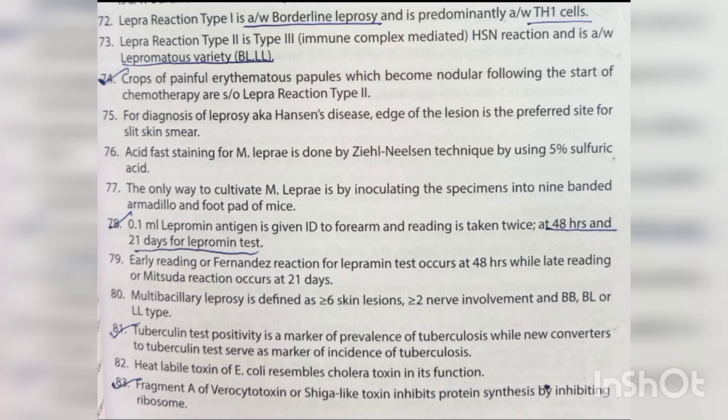Lepra reaction Type 1 is associated with borderline leprosy and is predominantly associated with Th1 cells. Lepra reaction Type 2 is a Type 3 immune complex-mediated hypersensitivity reaction, associated with lepromatous variety (BL and LL). Crops of painful erythematous papules becoming nodular following start of chemotherapy are suggestive of Lepra reaction Type 2. For diagnosis of leprosy (Hansen's disease), the edge of the lesion is the preferred site for slit skin smear.